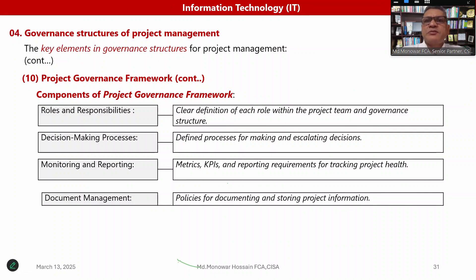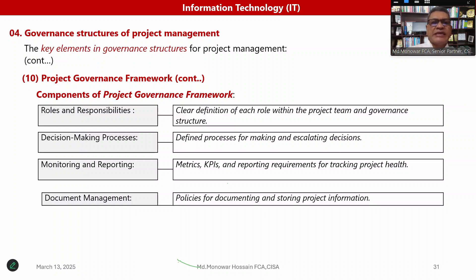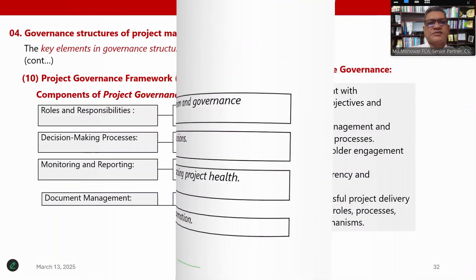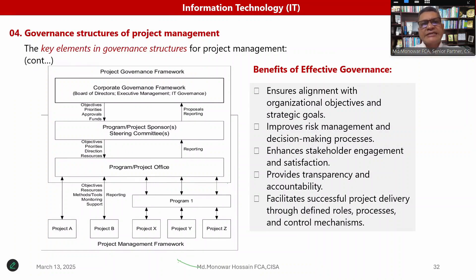The components of a project governance framework include: clearly defined roles and responsibilities for each person within the project team and governance structure; a defined decision-making process for project decisions; monitoring and reporting — including metrics, KPIs, and reporting requirements for project health; and document management policies for storing project information. This structure can encompass a corporate governance framework with board, directors, IT governance, and more, drawing from frameworks like CISA.